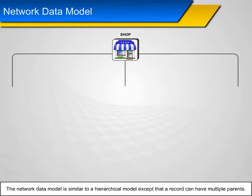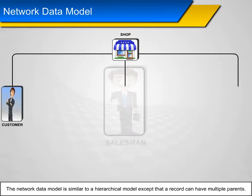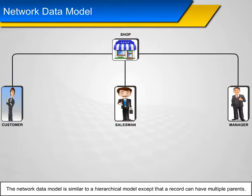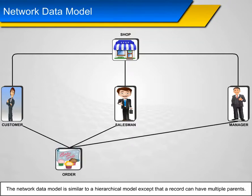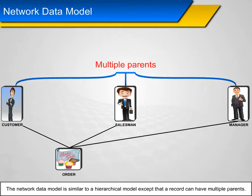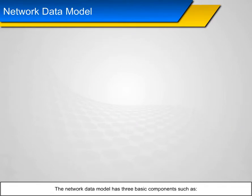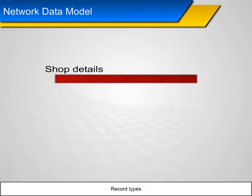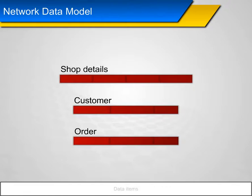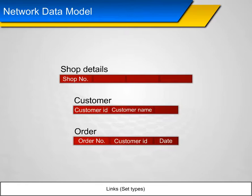Network data model: The network data model is similar to the hierarchical model except that a record can have multiple parents. The network data model has three basic components.